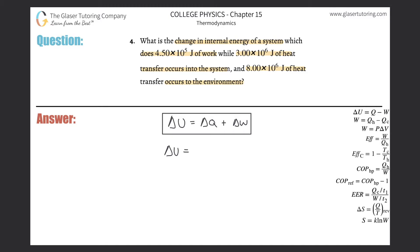So let's now plug in our values appropriately. It says the system is doing work - it does 4.5 times 10 to the 5 joules of work. That's the only work in the problem. The other things are heat transfers.